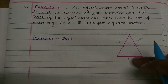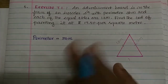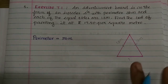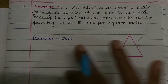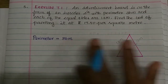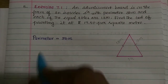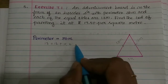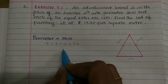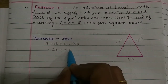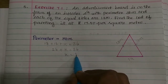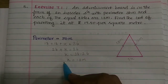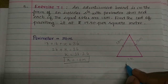So this side is what we need to find. 13 plus 13 is 26. The perimeter is 36, minus 26 gives us the remaining side, which is 10. So x is equal to 10 meters. The third side is 10 meters.